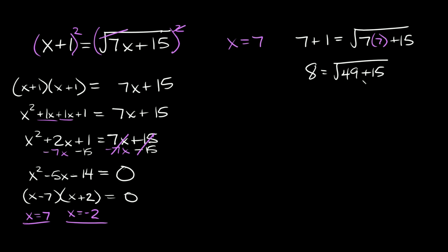49 plus 15 is equal to 64. So then here we get that 8 is equal to the square root of 64. This is obviously a true statement. So that means this solution, x is equal to 7, is a solution to this equation.